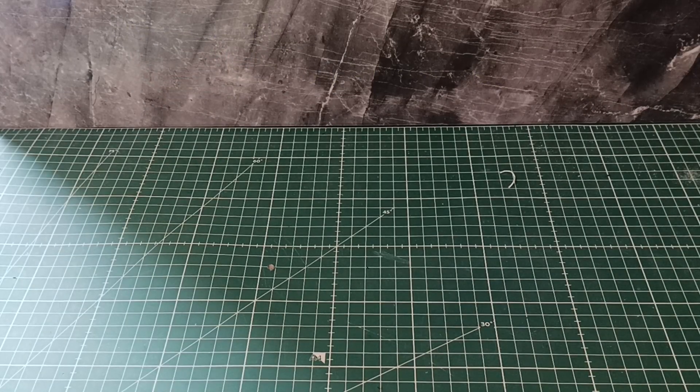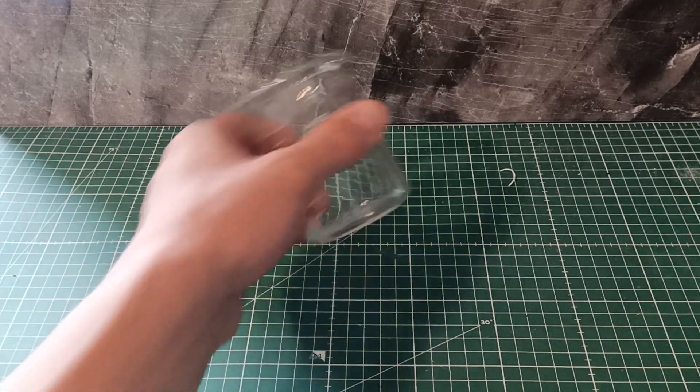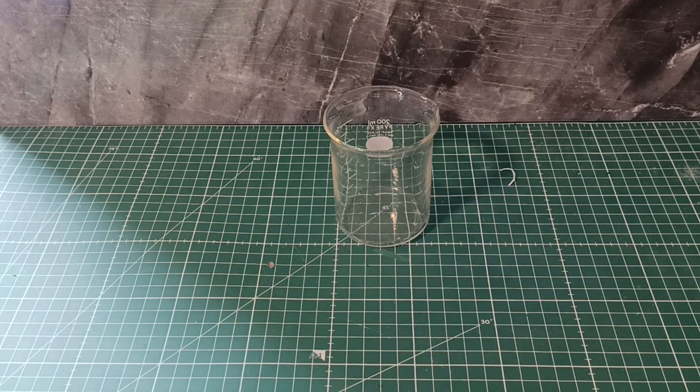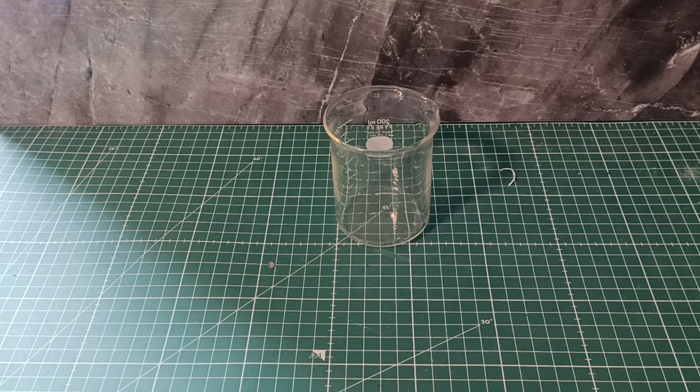So, with all that off to the side, let's get started with the mixture. First, let's get ourselves a container in which we mix all the components. I got myself a beaker. Then, we need to get a scale.